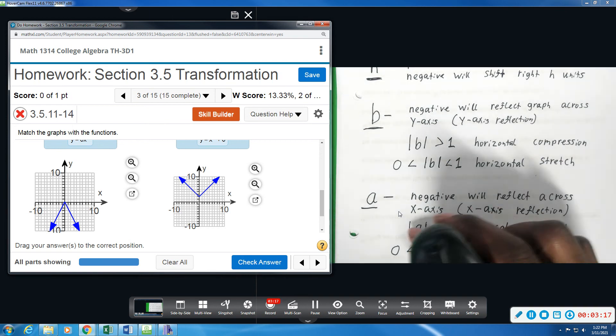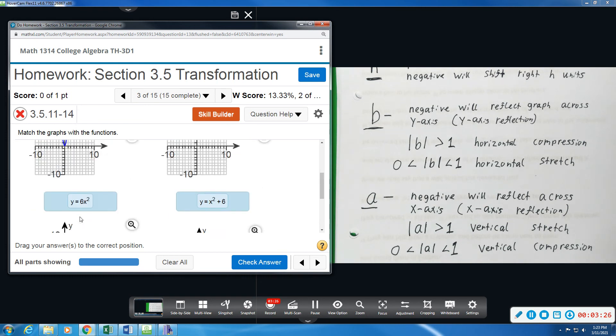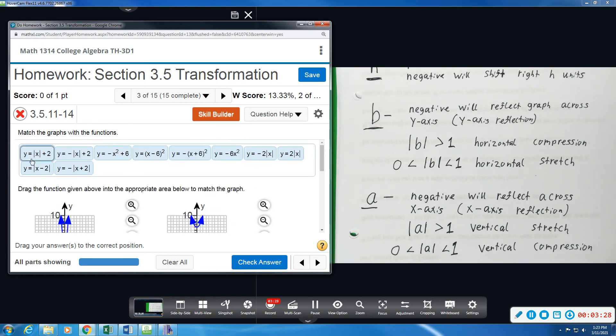So whatever the number is, the absolute value of it is bigger than one, and adding that negative will just reflect it. That negative does not mean I'm looking for something less than one. It just means the absolute value of that has to be greater than one when we compare it.